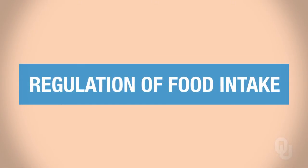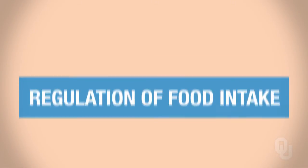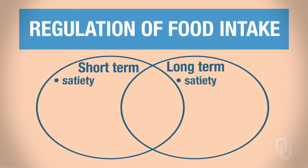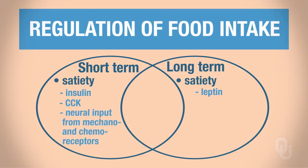We're going to pick up where we left off with the regulation of food intake. There are satiety factors involved in both short-term and long-term regulation. Long-term involves leptin, while short-term involves insulin, CCK, and neural input from chemo- and mechanoreceptors. For feeding behavior—why you eat—there's also short-term and long-term regulation, both involving orexogenic factors. Ghrelin is also an orexogenic factor.